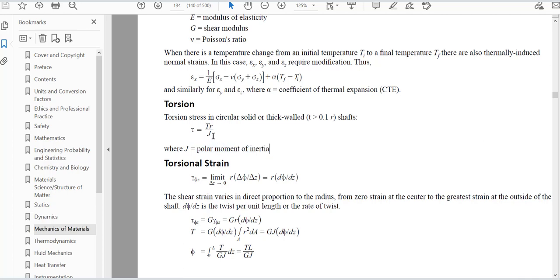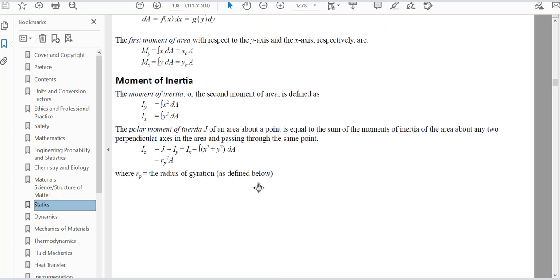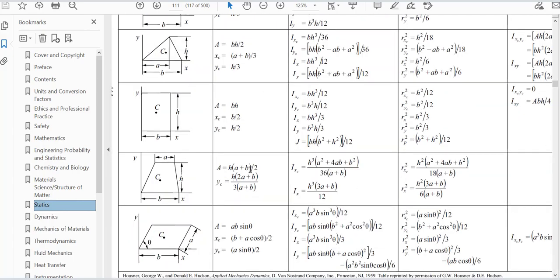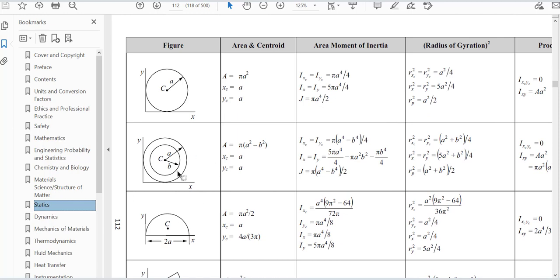The polar moment of inertia J is determined by looking at the statics section. You can scroll down to the tables. We do not have a hollow shaft, we have a solid steel shaft. So our J value is pi A to the 4 divided by 2. A is the radius of the shaft.